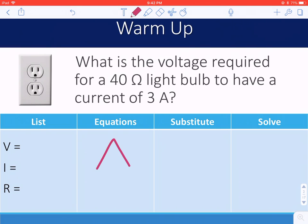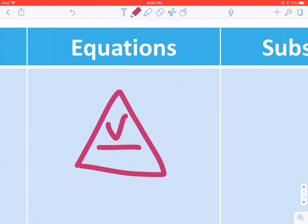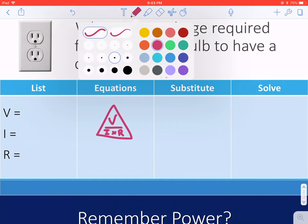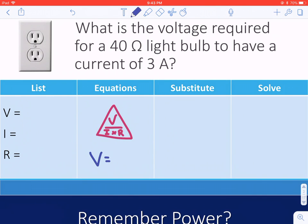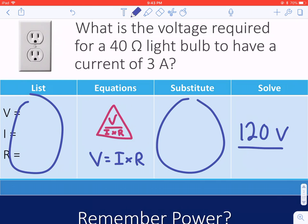Remember, Ohm's Law triangle is V on the top, I times R on the bottom. Make it a little cleaner. V on top, I times R on the bottom. So if I want to find voltage, that's just voltage is equal to I times R. So I can find, ultimately, my voltage in the end. 40 times 3 is 120 volts. And of course, I would expect that on yours, you can fill in the list and the substitute as well.